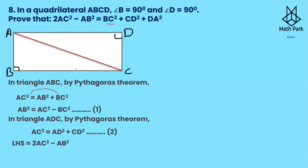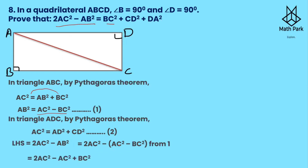In triangle ADC, by Pythagoras theorem, AC² = AD² + CD². This is equation two. Now take the left hand side of what is to be proved: 2AC² − AB². Substituting equation one, AB² = AC² − BC², we get 2AC² − (AC² − BC²). Opening the bracket: 2AC² − AC² + BC² = AC² + BC².